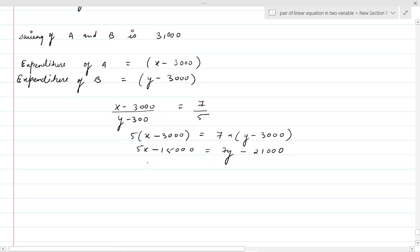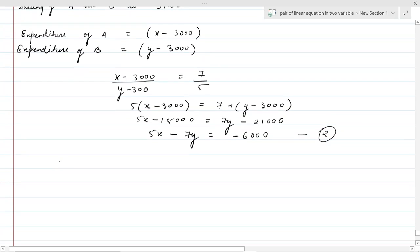So the equation is 5X minus 7Y equal to minus 6,000. This will be equation second. Now, solving equation first and second.